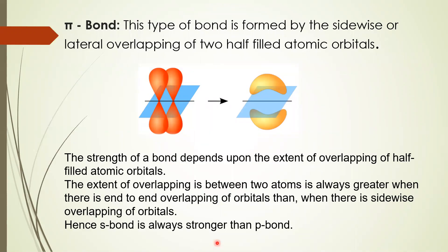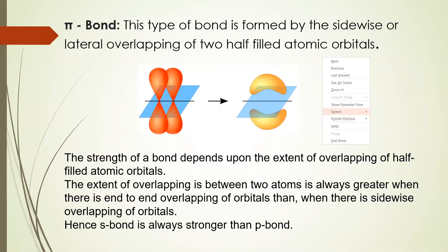A pi bond is a bond which is formed by sidewise or lateral overlapping. Overlapping of two half-filled atomic orbitals takes place. Pi bonds form above and below the plane because this involves a p orbital — specifically px and py orbitals are involved in the pi bond formation.